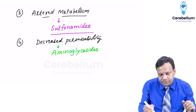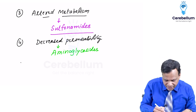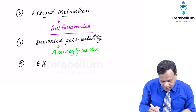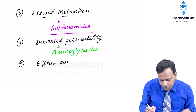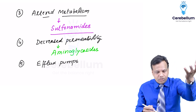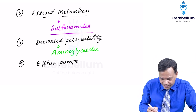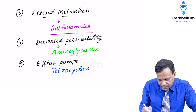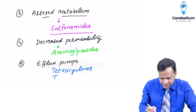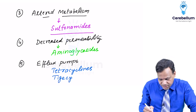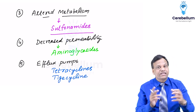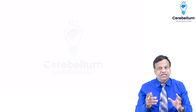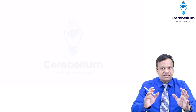Lastly, bacteria may develop resistance by developing efflux pumps — pumps that throw the drug out. This mainly develops against tetracyclines. Tigecycline was developed to overcome this pump, but even against tigecycline some bacteria have now developed efflux pumps.